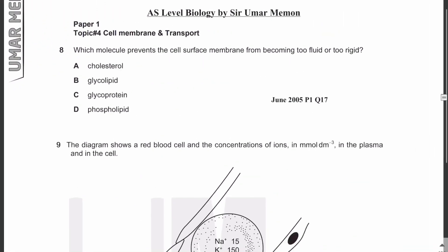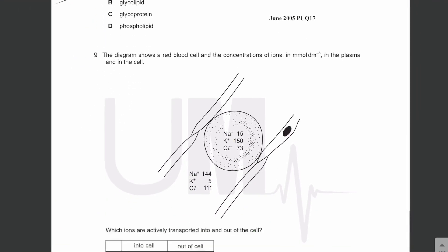MCQ number eight: which molecule prevents the cell surface membrane from becoming too fluid or too rigid? This is the function of cholesterol — it is the molecule inside the membrane that prevents the membrane from becoming too fluid or too rigid. Let's move on to MCQ number nine.